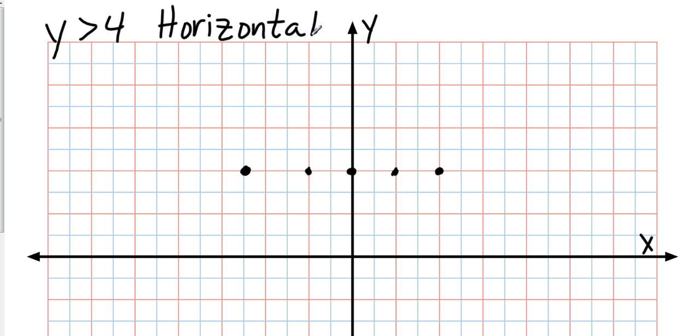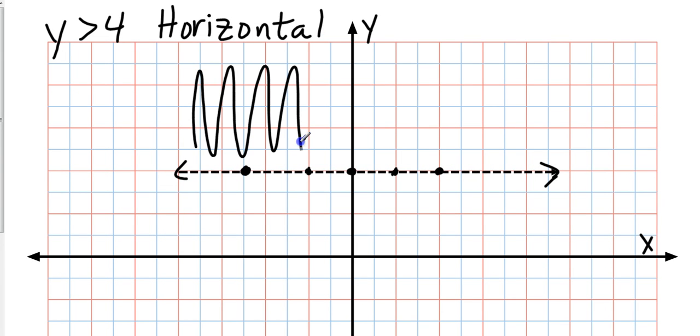Because it is greater than and it doesn't have an equal to underneath it, then we need to do a dashed line. Now, the great thing about horizontal and dashed lines is we don't have to test these. I know if I have a horizontal line, I know which way is greater. Is greater going to be up or is it going to be down? Obviously, greater will always be up. So I'm going to shade that area.